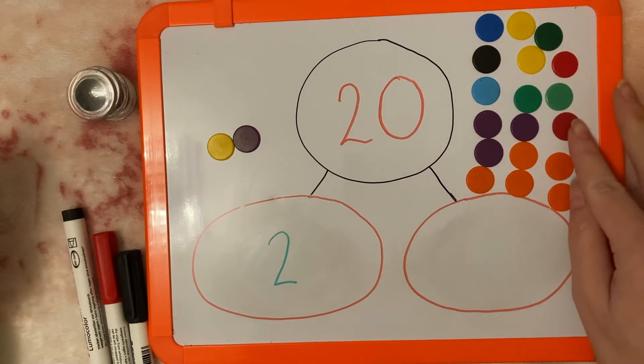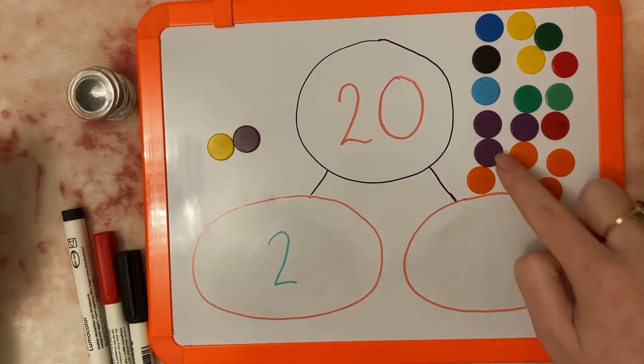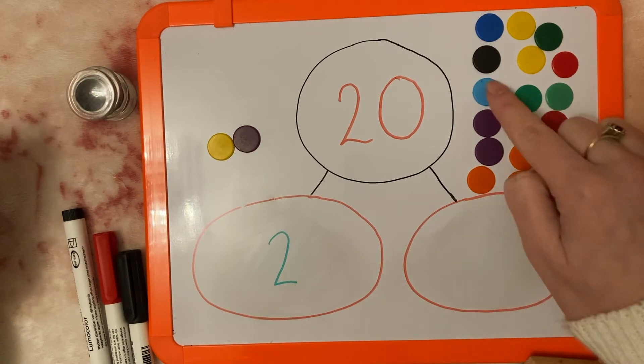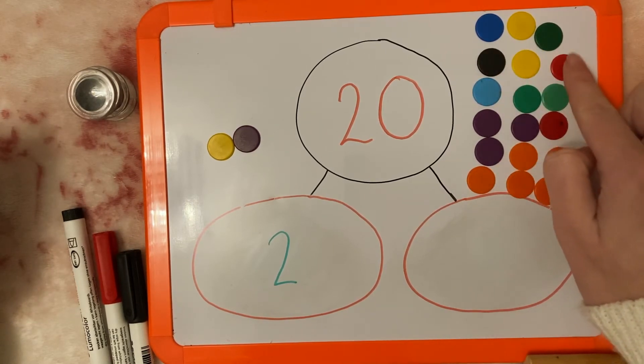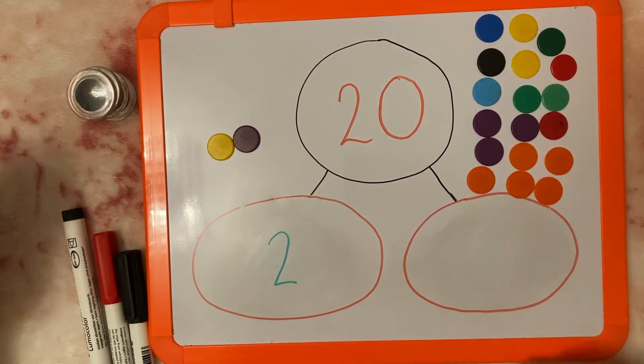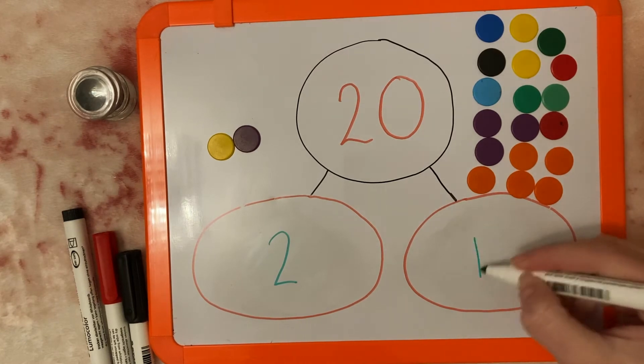So let's see how many I've added on. 1, 2, 3, 4, 5, 6, 7, 8, 9, 10, 11, 12, 13, 14, 15, 16, 17, 18. So I've added 18 on.